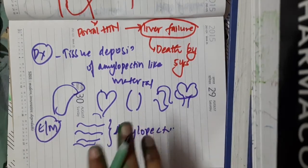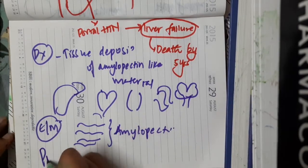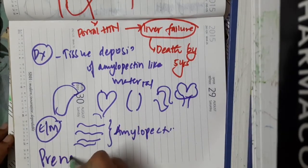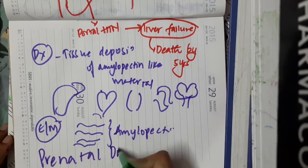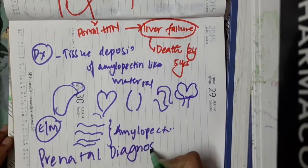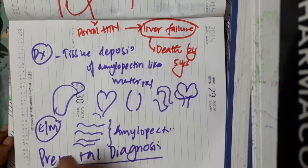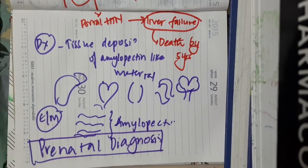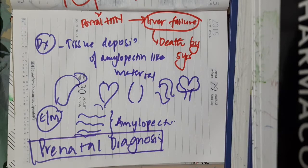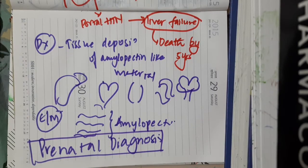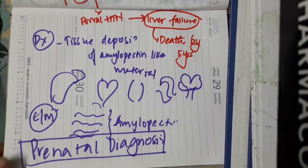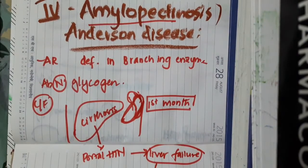Importantly, prenatal diagnosis can be done for amylopectinosis. This prenatal diagnosis is done by measuring the enzyme activity in cultured amniocytes, allowing us to diagnose this disease prenatally.